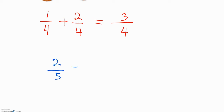If you have two fifths minus one third, find a common denominator, because the denominator tells you exactly how many equal parts your whole has been divided into. We need to make them the same so that you can add or subtract the numerators. Five times three will give you 15.